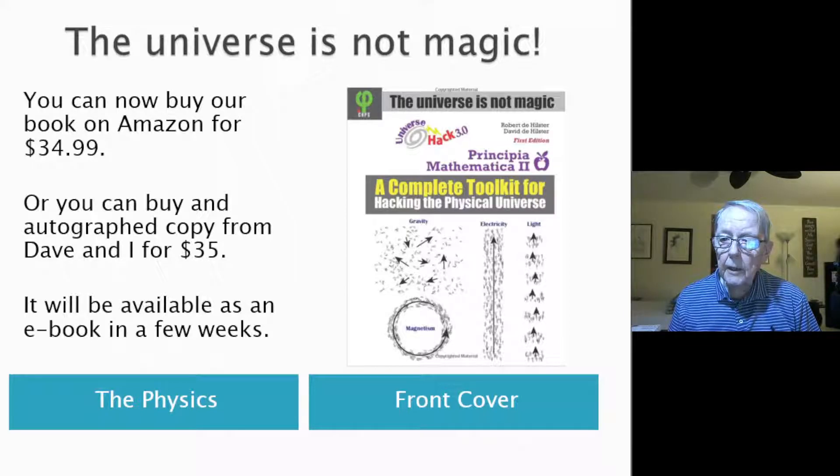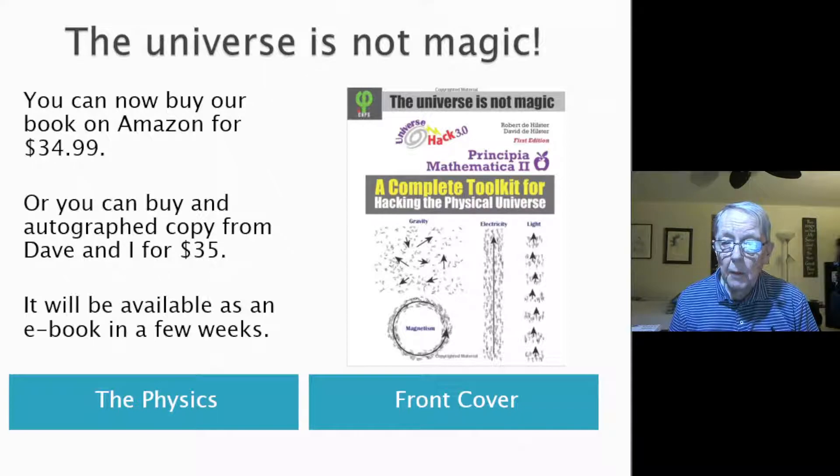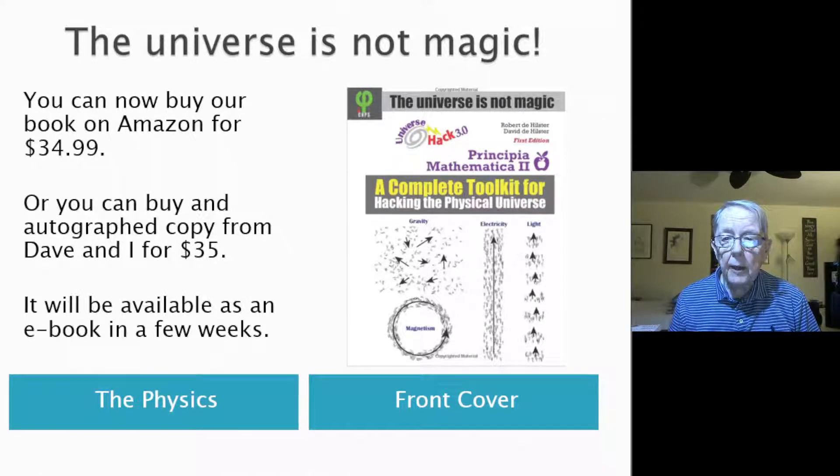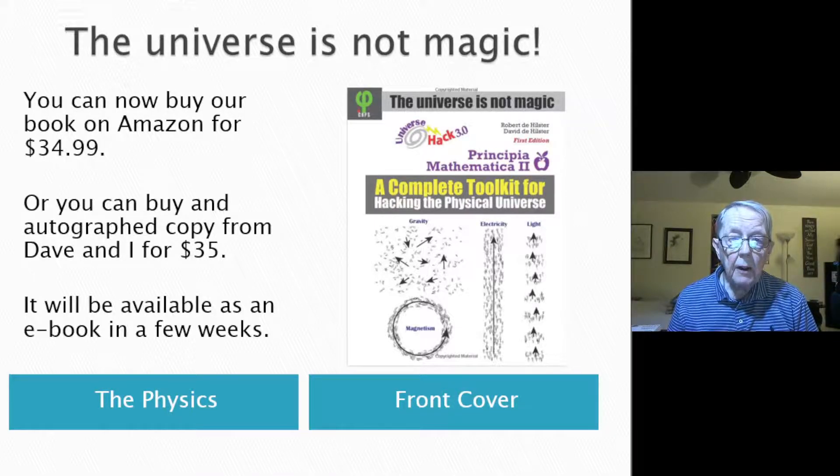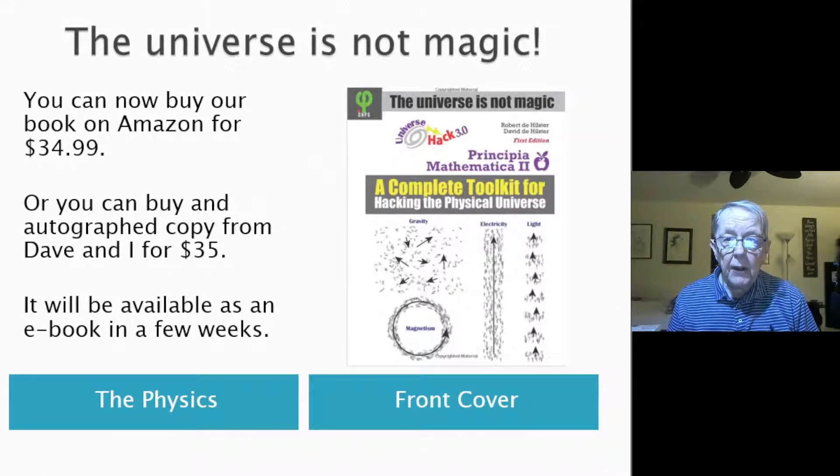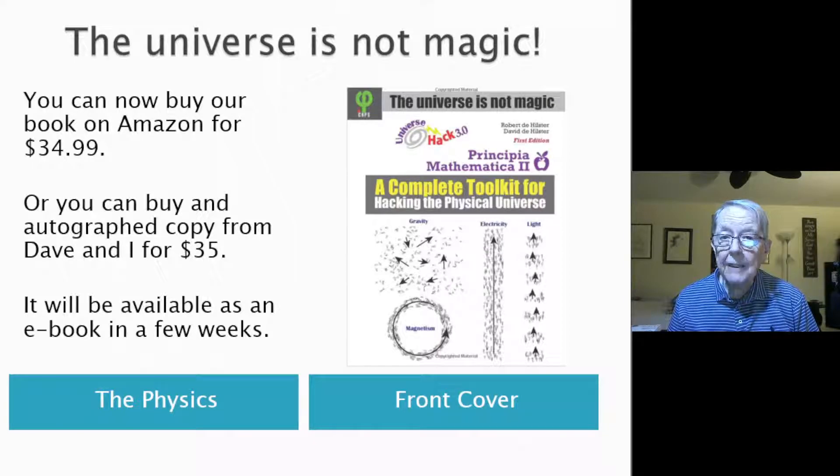That's our logo for our book. You can see there's a small version of the double apple here, and it kind of refers to Newton, who used the apple to help define gravity in the first place. In our book, we talk about a second level of gravity, which is smaller and faster. That's why there's a smaller apple inside the larger apple. The theme of the book is the universe is not magic.